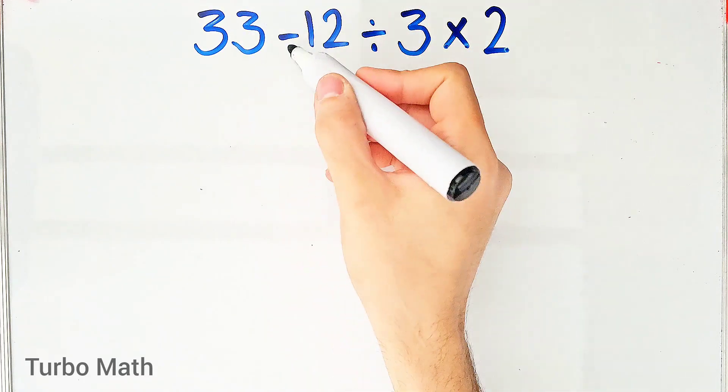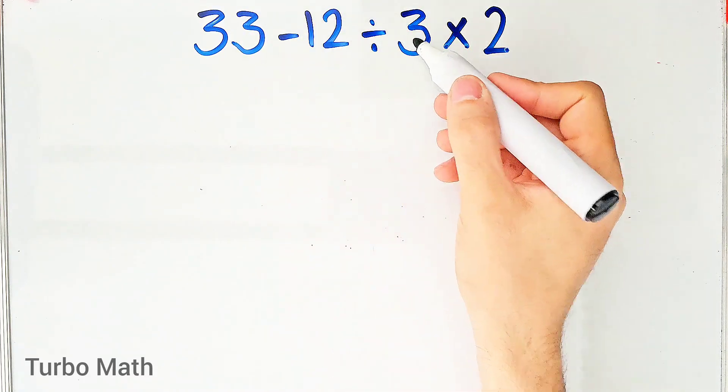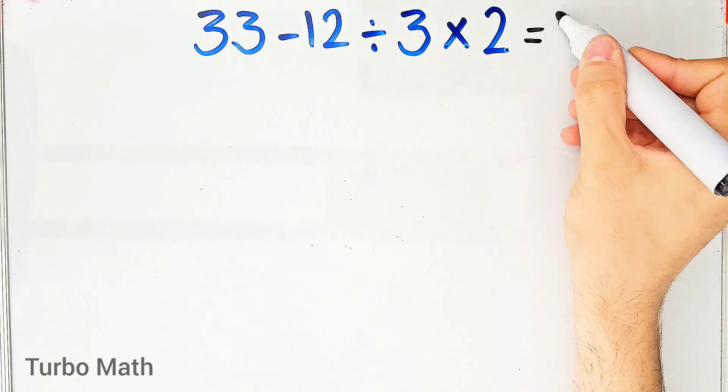33 minus 12, then divided by 3, then times 2. What is the answer of this question? Can you solve it?